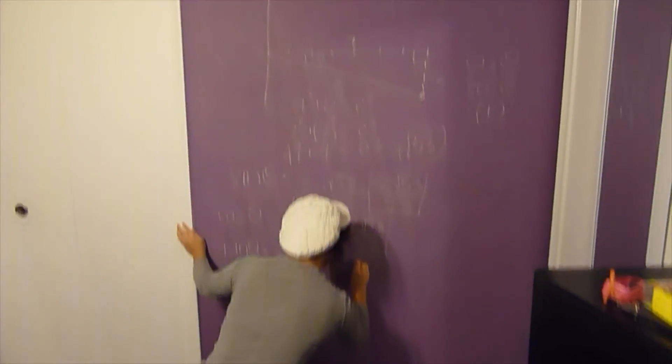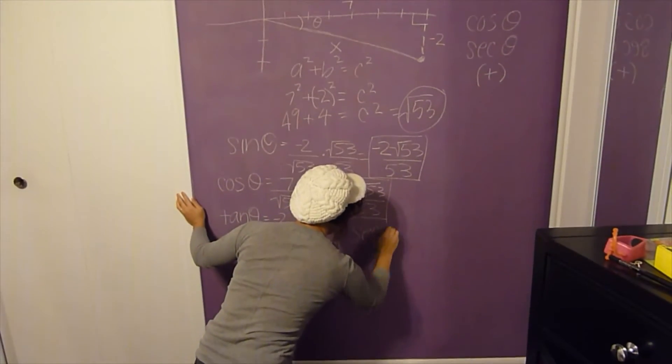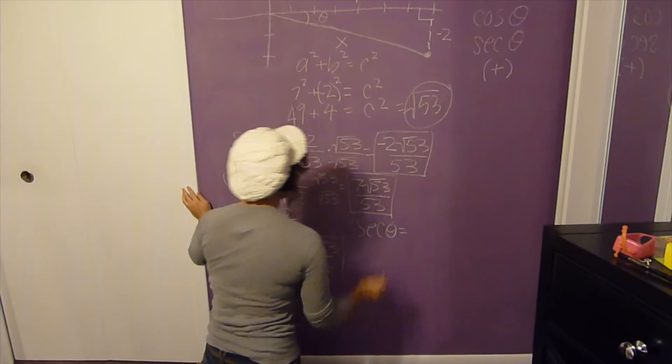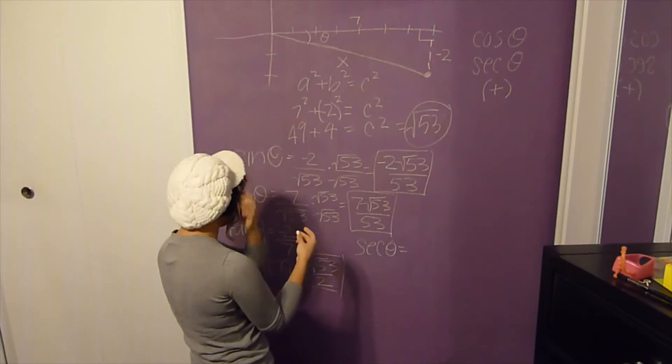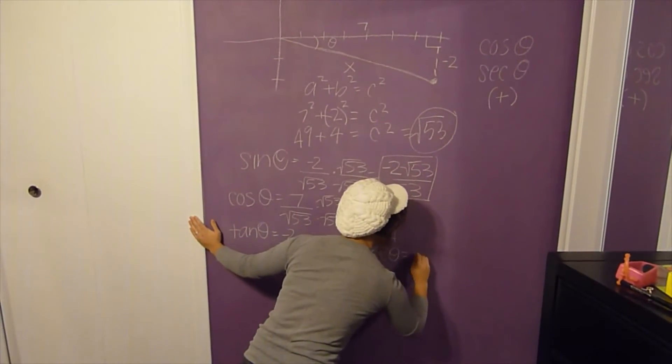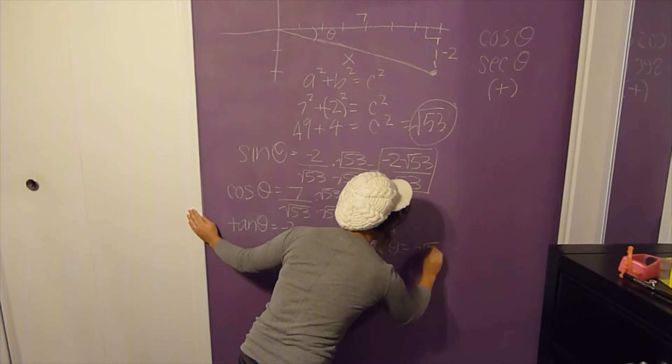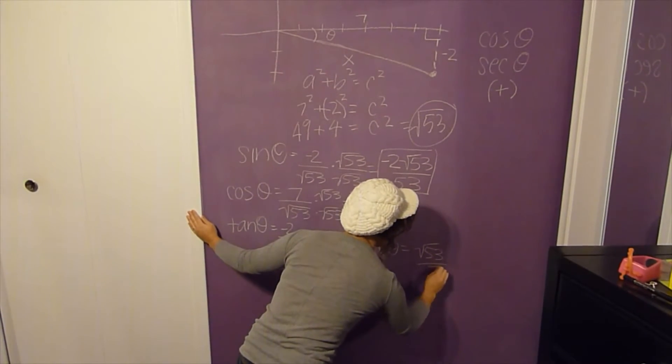For secant of theta, it'll be the reverse of your cosine. So you will have √53 over 7.